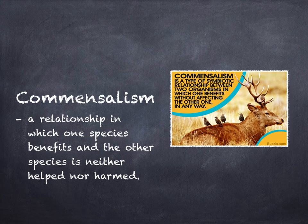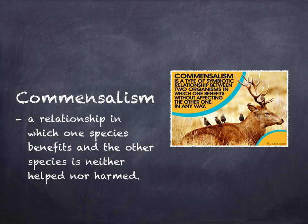Commensalism: Have you ever seen a bird build a nest in a tree? The bird gets a place to live while the tree is unharmed. This relationship is an example of commensalism — a relationship in which one species benefits and the other species is neither helped nor harmed. In nature, commensalism is not very common because two species are usually either helped or harmed a little by any interaction.